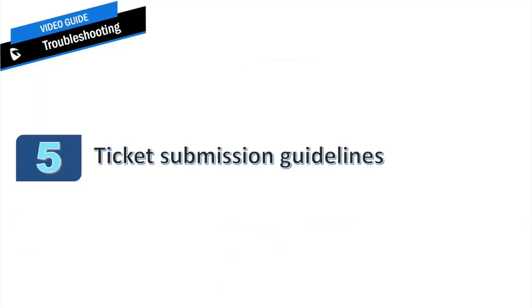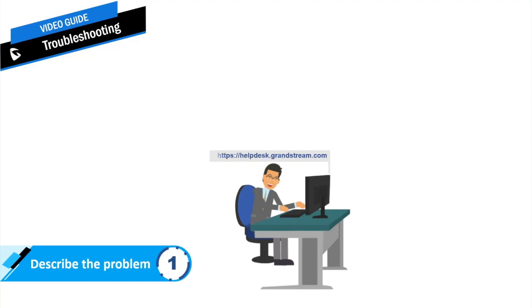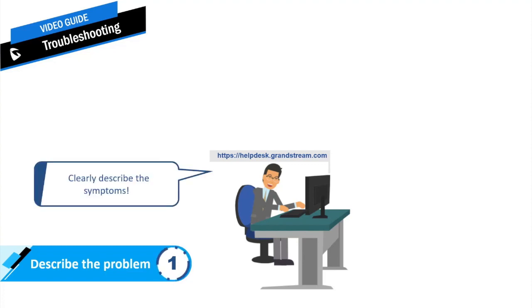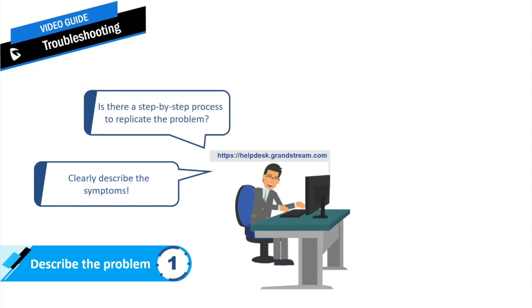If you have tried everything and are still experiencing a problem, it is time to submit a support ticket with the Grandstream Help Desk. To help resolve the problem quickly, provide enough information to help the support engineer understand the problem and create a troubleshooting plan. The first step is describing the problem — providing descriptive details about the issue is very crucial. Always clearly describe the symptoms, include any process required to reproduce the problem. This is very important because if the support engineer can reproduce the issue, you will not be asked to provide additional information like logs or traces.